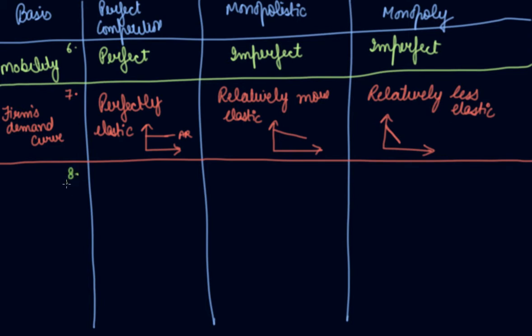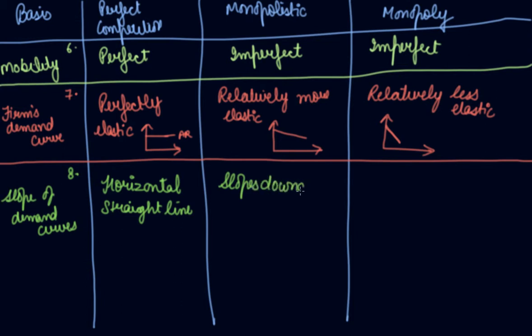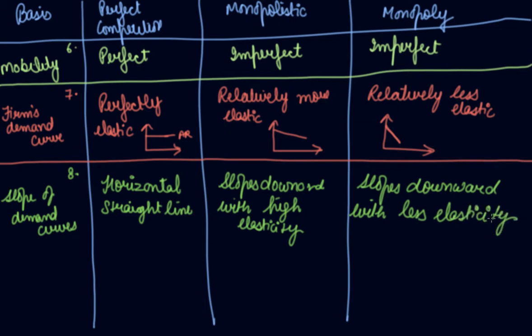The eighth point of difference we can take is slope of demand curves. You can see the horizontal straight line in perfect competition. In monopolistic it slopes downward with high elasticity. In monopoly it also slopes downward with less elasticity.